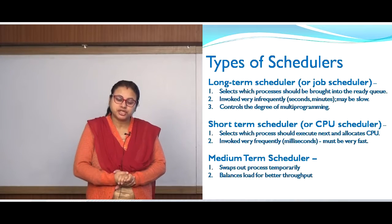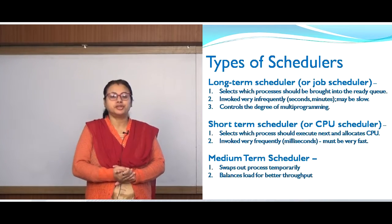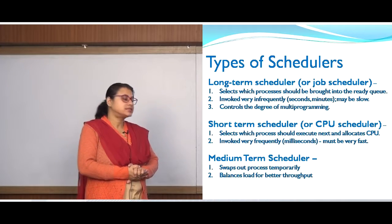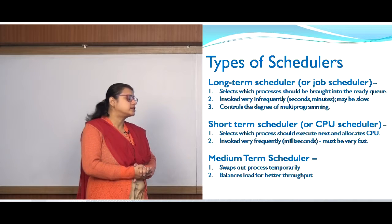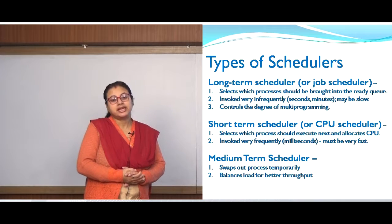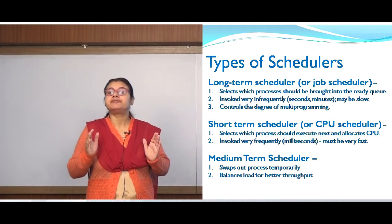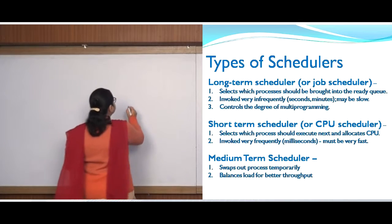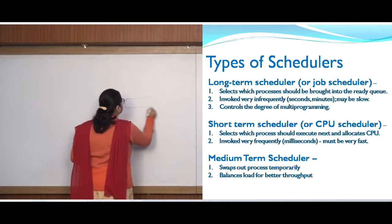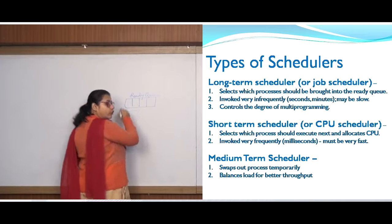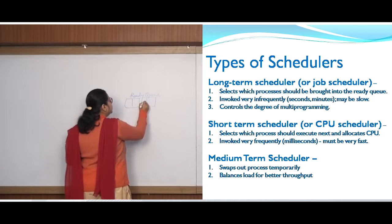Next comes the short term scheduler, also known as the CPU scheduler. It selects which process should execute next and allocates the CPU. Now in our ready queue, say we are having four or five processes. Say this is your ready queue and there are four processes: P1, P2, P3, and P4.